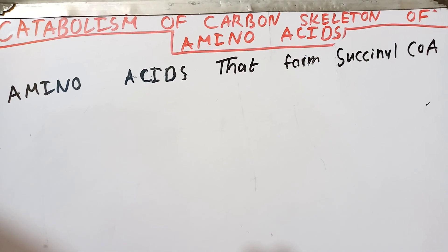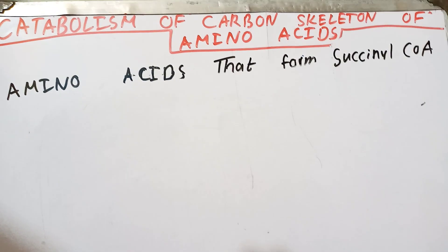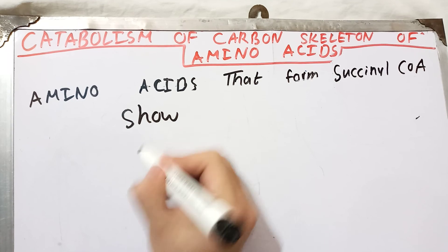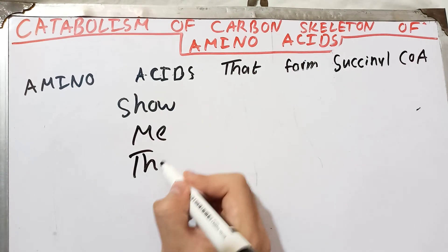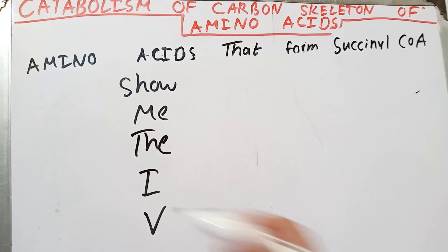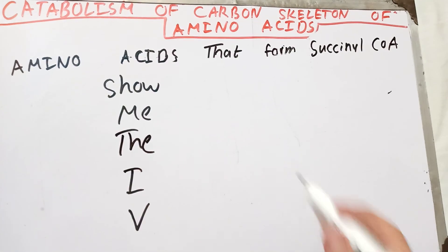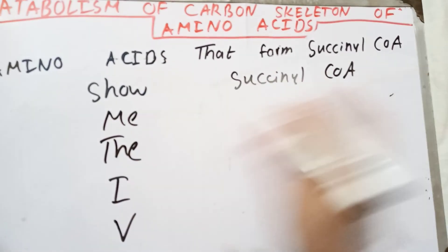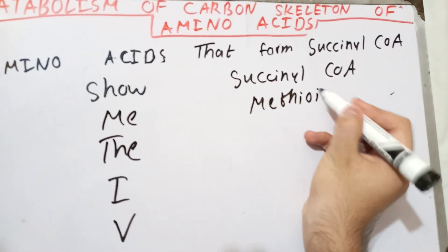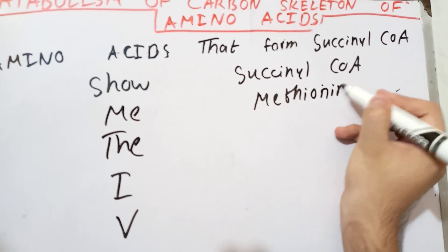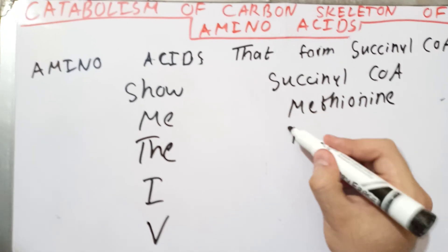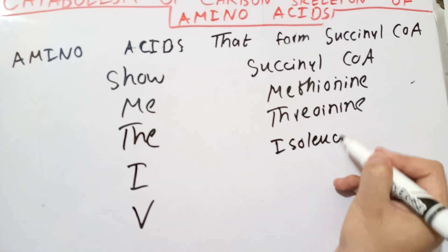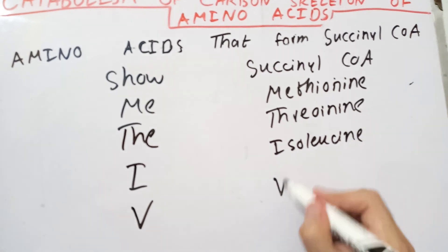Hello everyone, today we will talk about the amino acids that form succinyl coenzyme A. The mnemonic here is 'SMTIV' — you can say 'Show Me The IV line' but 'line' is not used here. The S is for succinyl-CoA, M for methionine, T for threonine, I for isoleucine, and V for valine.